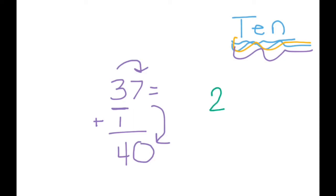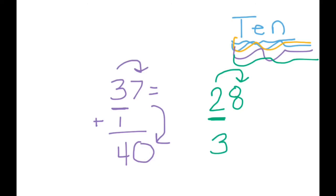Suppose we had the number 28. We're rounding to the nearest ten. Find the number in the tens place, look next door. Is that number four or more? It sure is. So we're going to add one to the two — it becomes a three. Every other number behind the two becomes a zero. So 28 rounded to the nearest ten is 30. There you have it. You did a great job. I'll see you again soon.